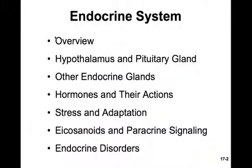In our final chapter this semester, we'll be examining the endocrine system. We'll look at the hypothalamus and the pituitary gland, as well as several other prominent endocrine glands. We'll discuss some of the hormones and their various actions. We'll look at stress and the adaptation to stress, as well as more local signaling with eicosanoids and paracrines. And finally, we'll consider some endocrine disorders.